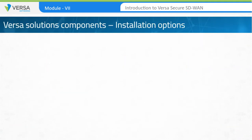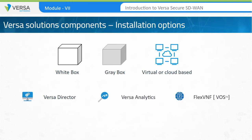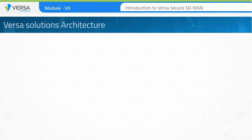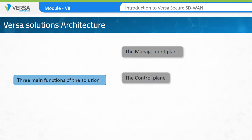All Versa solution components can be installed in a white box, gray box, or in a virtualized or cloud-based infrastructure. Each of the three software images — the Versa Director, Versa Analytics, and FlexVNF — can be used in any of these deployment types. The solution architecture is composed of three main functions: the Management Plane, the Control Plane, and the Data Plane.